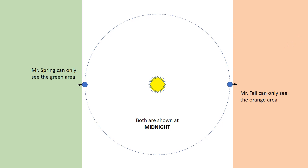Mr. Fall sees over here. Mr. Spring sees over here. There's nothing that they can both see. But that's if they look at the exact same time. They're both looking at midnight. What if they looked at some other time?